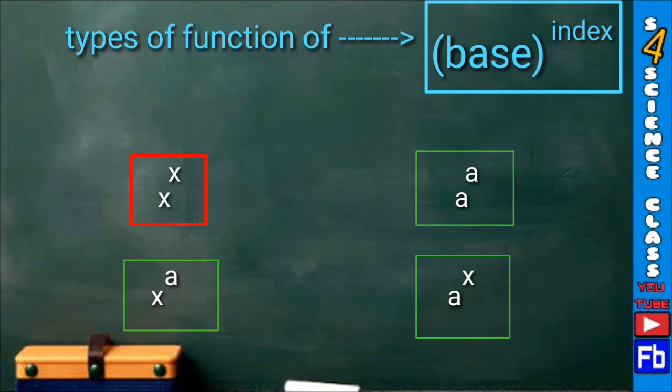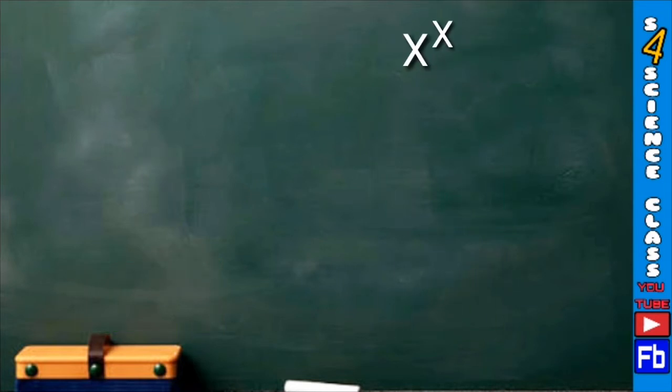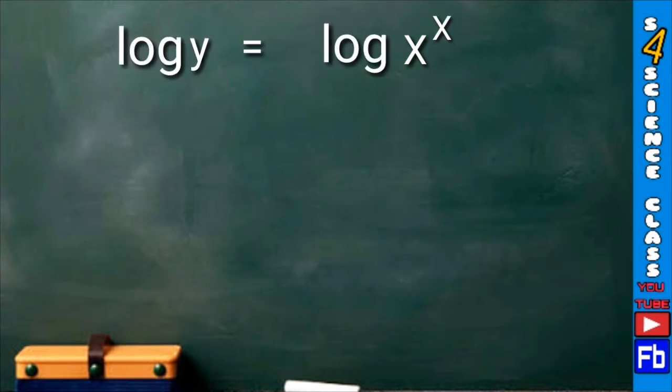The first step is to let y equal our function and take logarithm of both sides. The index or the power will come to the multiplication, and then differentiate with respect to x. We will get 1 by y dy by dx equal to x and the derivative of log x plus log x and the derivative of x.